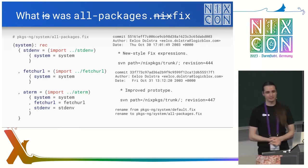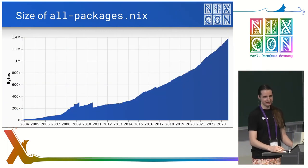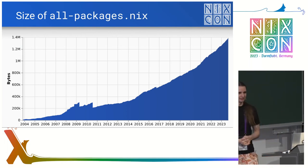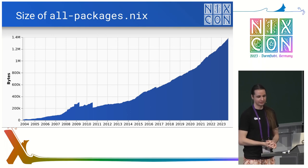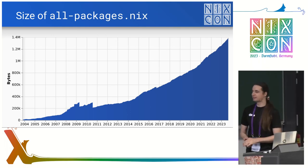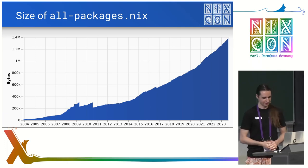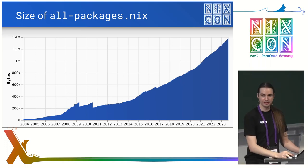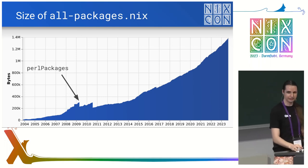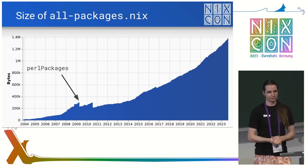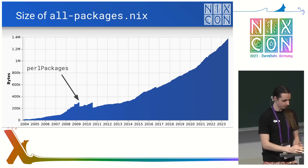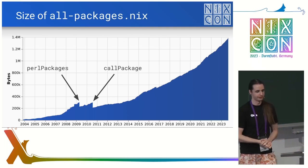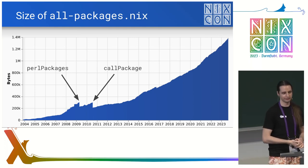So, that's great. What happened since then? Safe to say, Nix grew just a tiny bit over the last 20 years, and all-packages.nix grew with it. This is the size of all-packages.nix over time in bytes. You might wonder about these little bumps in 2009 and 2010. The first one is when Perl-packages was introduced and a lot of definitions were moved out into a separate package set. The second one was when call-package was introduced, which allows you to avoid passing all arguments individually, making it quite a bit smaller.